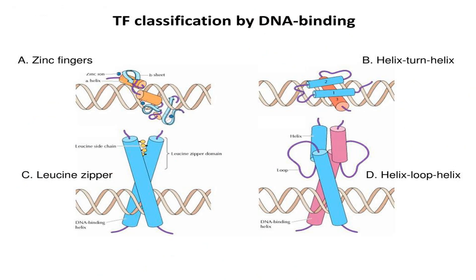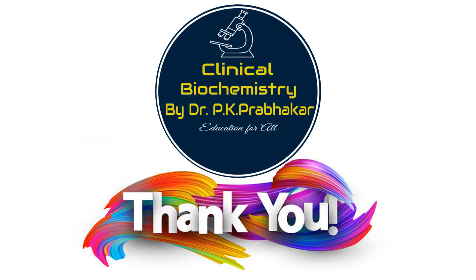So this is another DNA binding protein motif which regulates gene expression. We have already covered the zinc finger motif and the leucine zipper motif. Another day we will talk about helix-turn-helix and helix-loop-helix. Thank you very much, have a nice day.